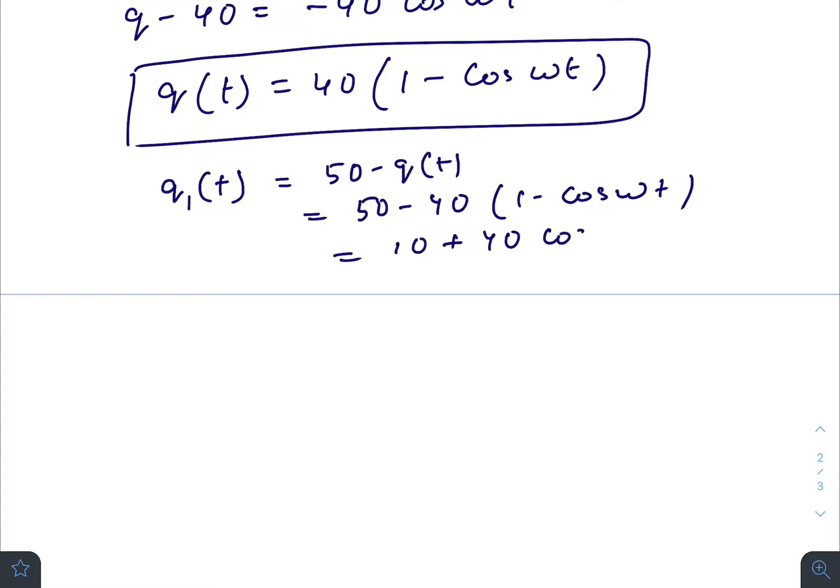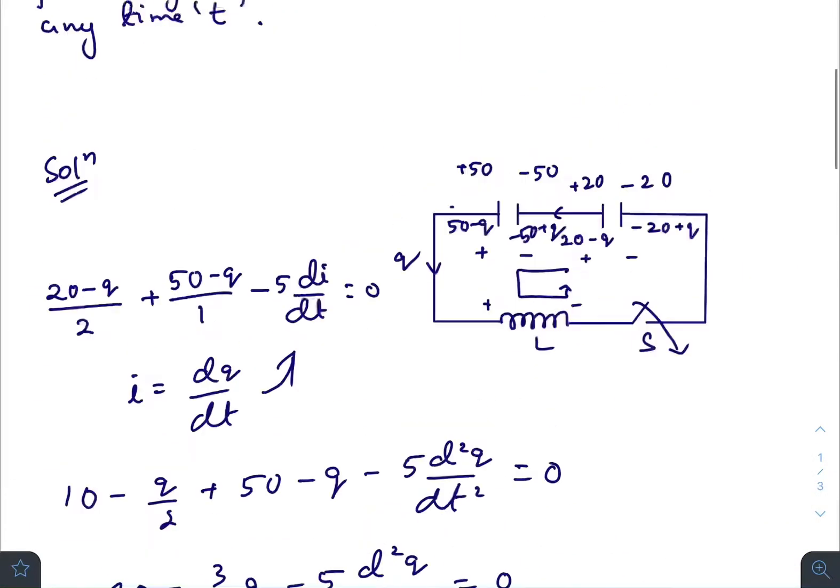So this is the charge on capacitor C1 at any time t. Similarly, you can find the charge on capacitor C2 at any time t, which will be 20 minus q. You can also find the energy stored in any one of the capacitors at any time t, and you can find the current flowing through the circuit at any time t by differentiating q.